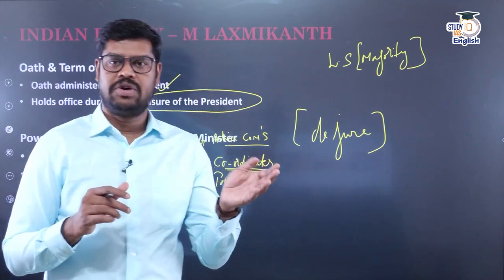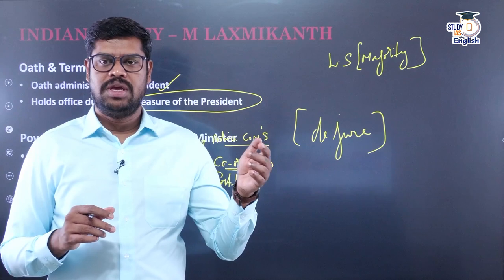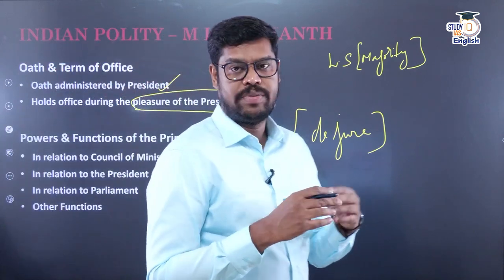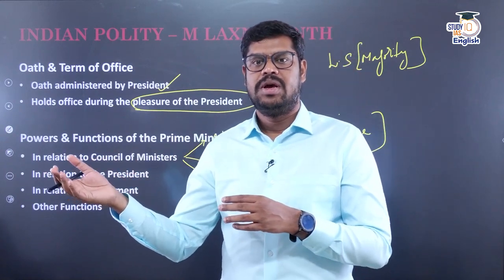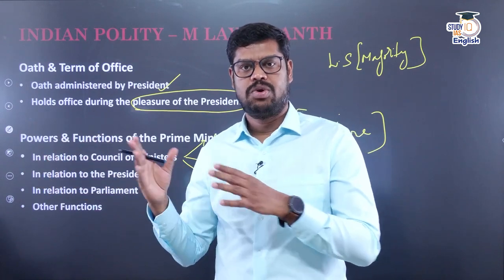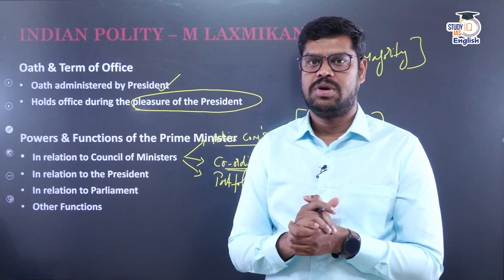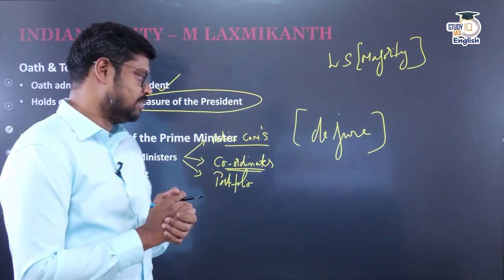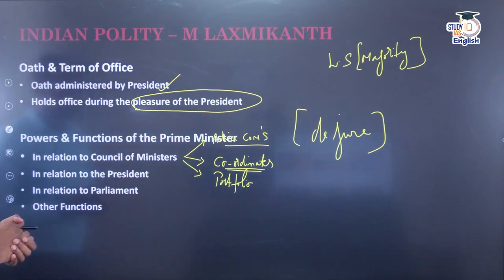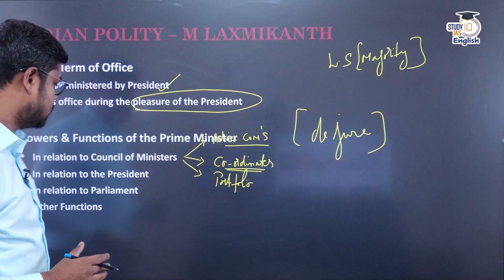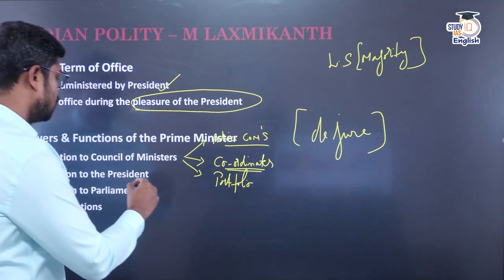Once portfolios are allocated, if there is any conflict between two different ministries — for example, between the Environmental Ministry and the Ministry of Road and Transport, where one wants to develop infrastructure but the other is not giving environmental clearances — the Prime Minister coordinates between them. He plays a very important role in relation to the Council of Ministers.